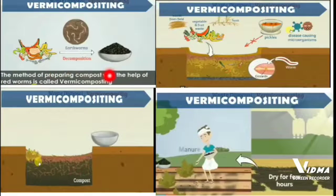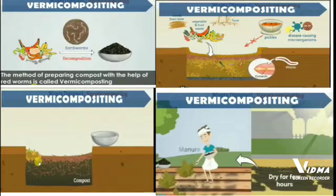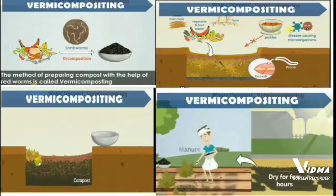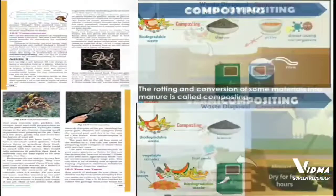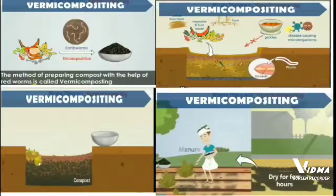Vermicomposting is the method of preparing compost with the help of red worms. This is also a process to make manure, but it is a more advanced method in which special red worms, also called earthworms, are used. In this process, a pit is made about 30 cm deep and the temperature is maintained at about 12 to 27 degrees Celsius — not too high or too low. In this pit, we put a layer of sand, then biodegradable waste, then water, and after that some earthworms or red worms are kept inside.